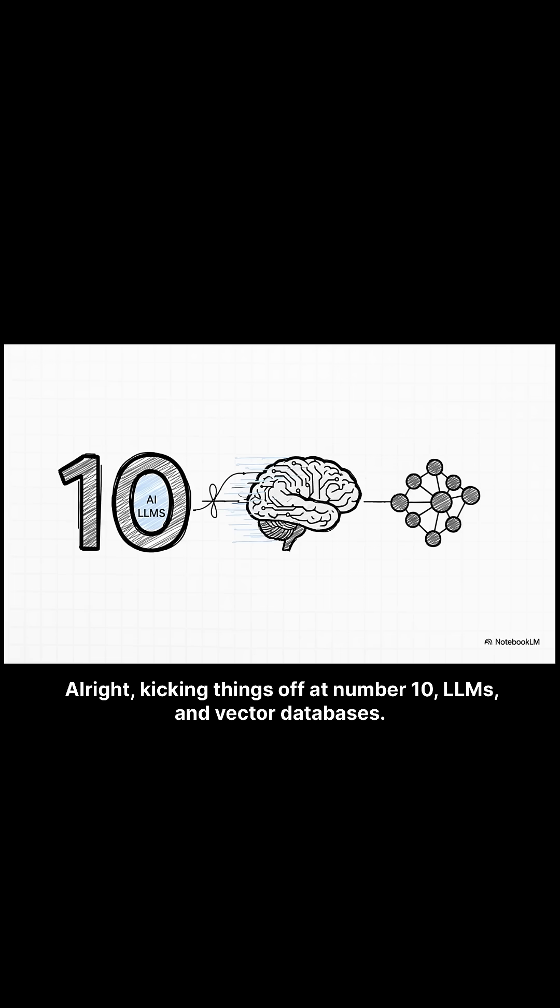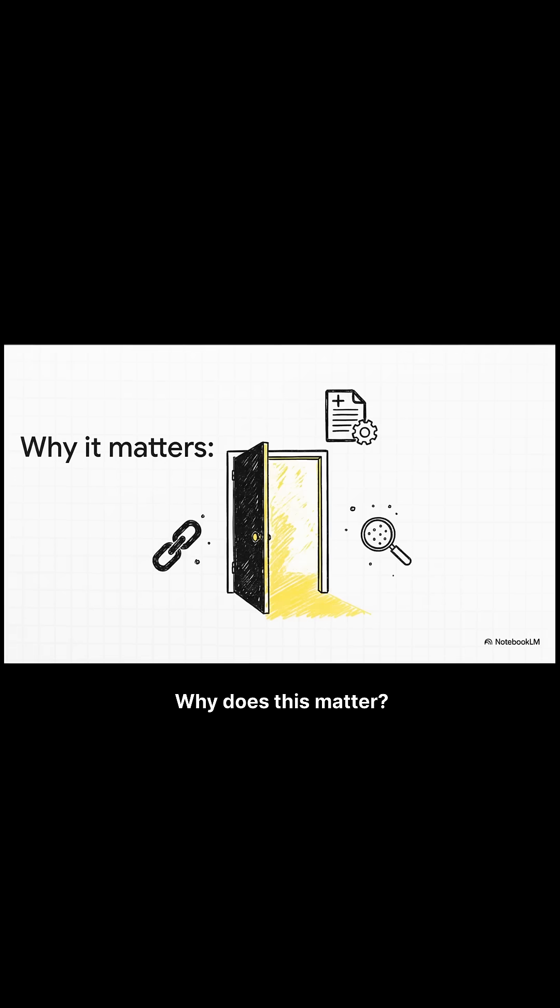All right, kicking things off at number 10, LLMs and Vector Databases. Think of it as the AI's brain and memory. Why does this matter? This is your key to building those next-gen, super-smart AI apps.